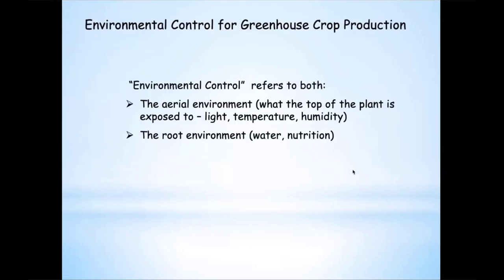I'm going to cover a couple areas. One would be what I call the aerial environment — that is from the soil line up: the light, temperature, humidity, carbon dioxide, gas exchange across the leaf, those type of things that are in the above-ground part of the plant that the plant perceives and is responding to.